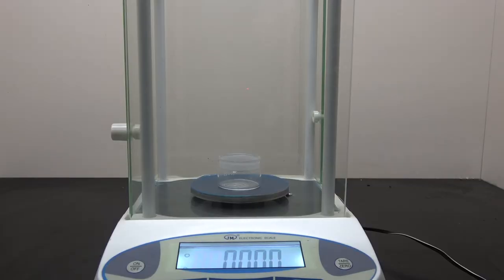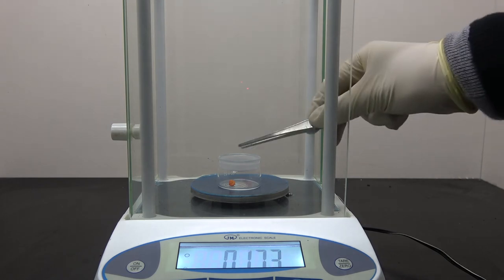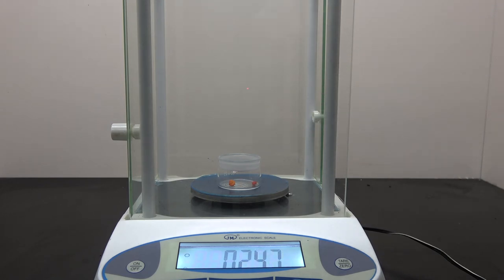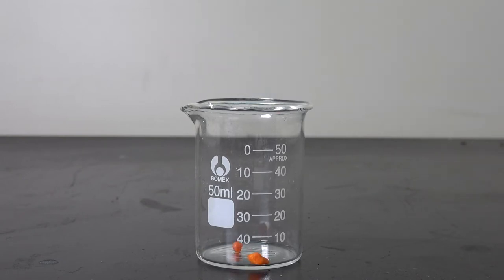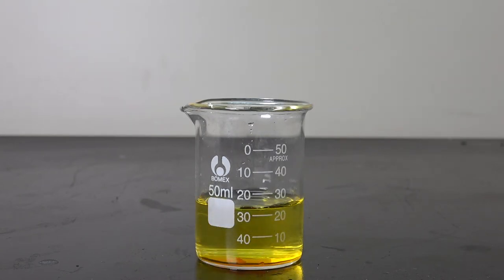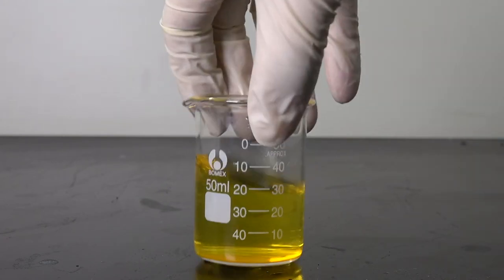With the help of my trusty analytical balance, I weighed out about 2.5 grams of hexachloroplatinic acid. An interesting property of hexachloroplatinic acid is that it is highly hygroscopic. You can see the crystal is getting wetter and wetter as it absorbs the moisture from the air. With the addition of 35 ml of distilled water, the crystals are quickly dissolved into solution.